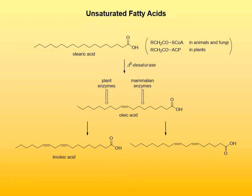In animals, fatty acids present in triacylglycerols are mainly saturated, meaning those triacylglycerols are fats. In fish and plants, fatty acids in triacylglycerols are mainly unsaturated, making those triacylglycerols oils. There are several biochemical pathways for synthesis of unsaturated fatty acids. In general, unsaturated fatty acids are synthesized by dehydrogenation of the corresponding saturated fatty acids. The enzyme involved is delta-9 desaturase, with NADP+ and oxygen as stoichiometric reactants. Substrates for dehydrogenation are coenzyme A esters of fatty acids in animals, and ACP (acyl carrier protein) esters of fatty acids in plants.